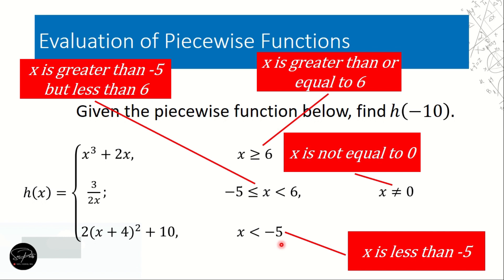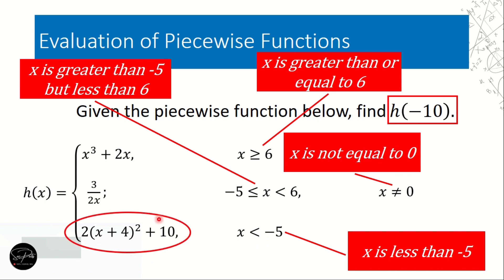Is our x, negative 10, less than negative 5? Yes. On the number line, negative 10 is to the left of negative 5, so negative 10 is less than negative 5. Since x is less than negative 5, we will use the third function: 2 times the quantity x plus 4 raised to the second power, plus 10.